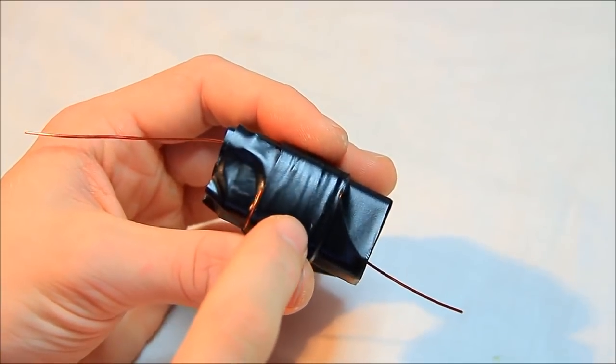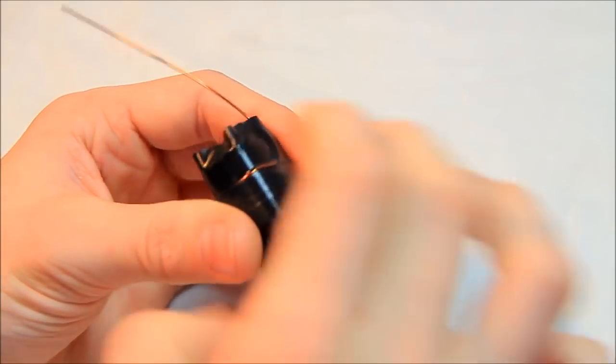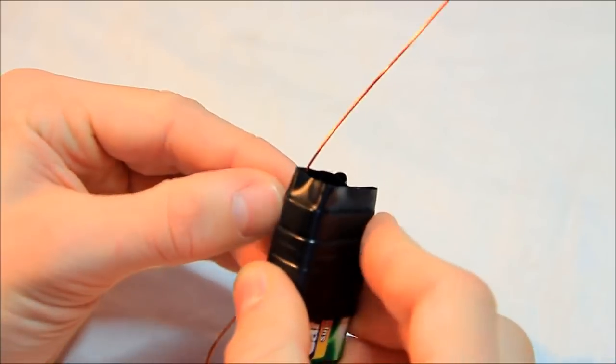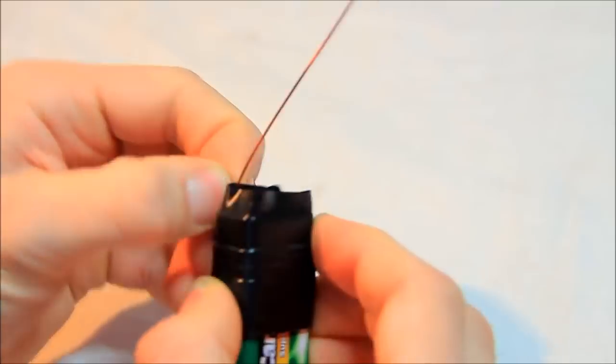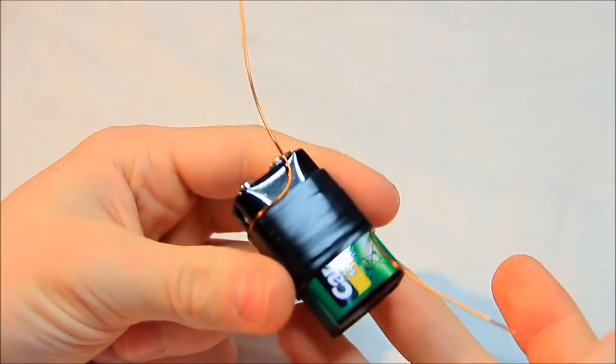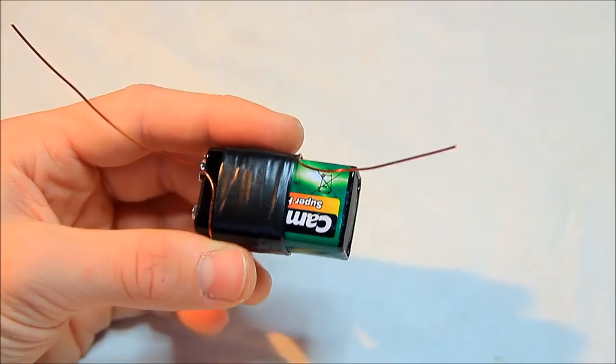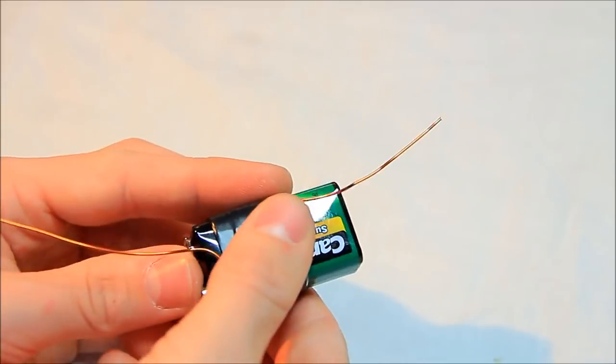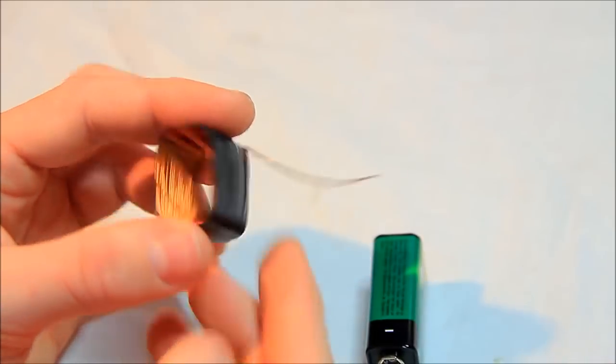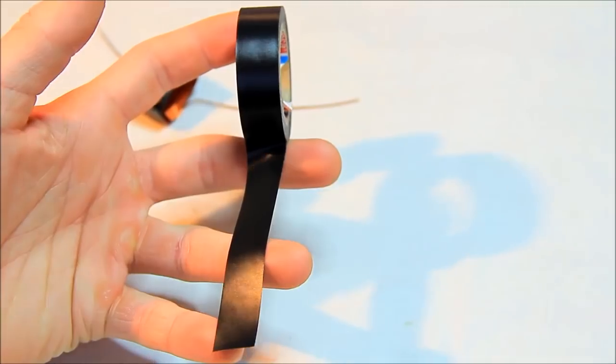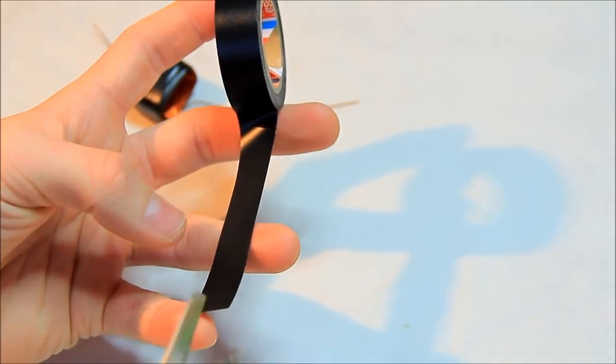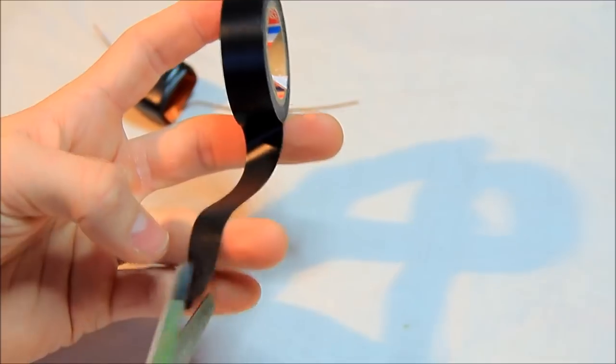So this is our main coil and we're gonna remove the electrical tape which fixes the copper wire on the 9-volt block. Then you push the 9-volt block out of the coil and here is our main coil. Now we cut a small piece of electrical tape to fix our coil.